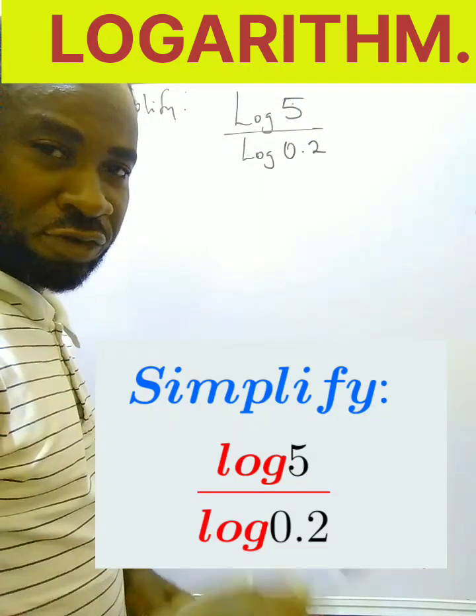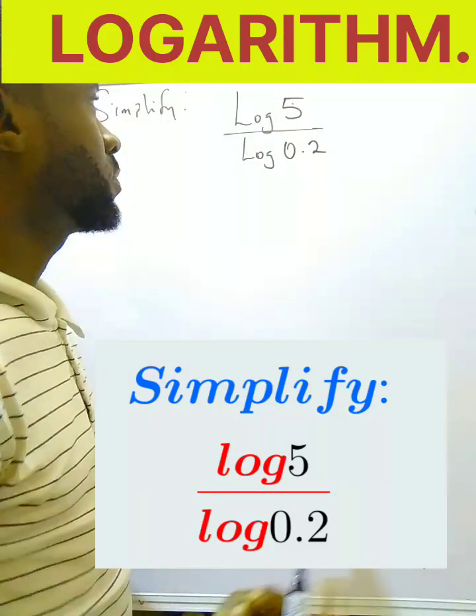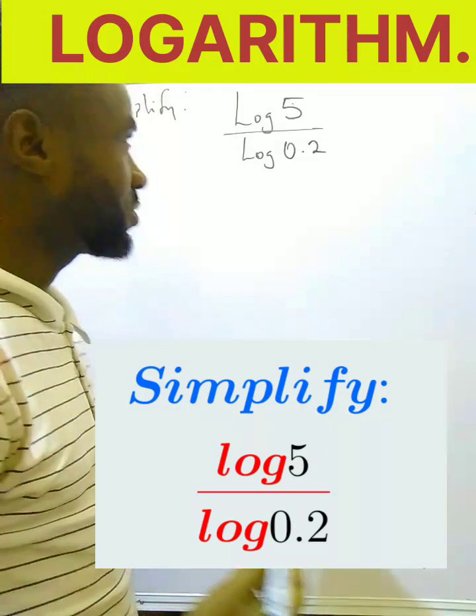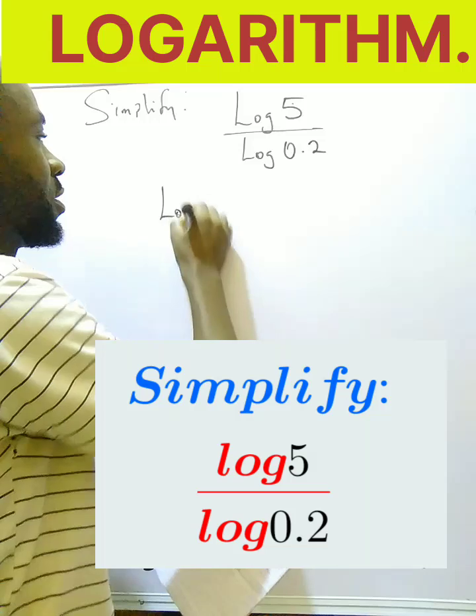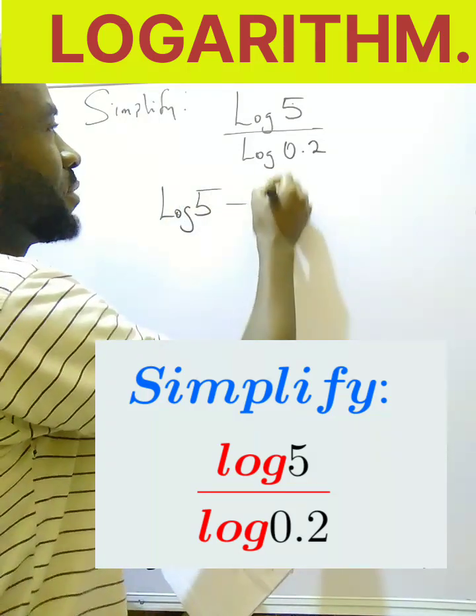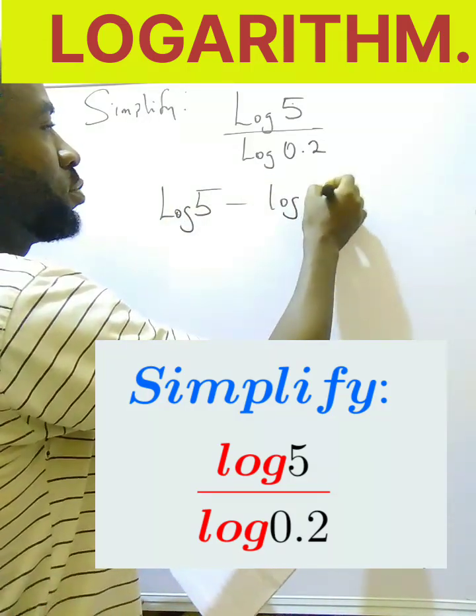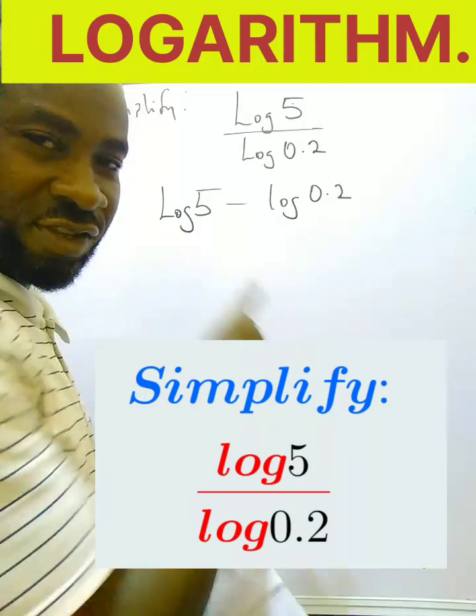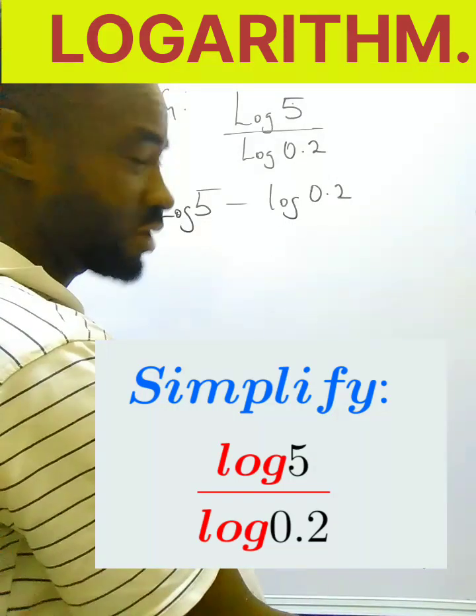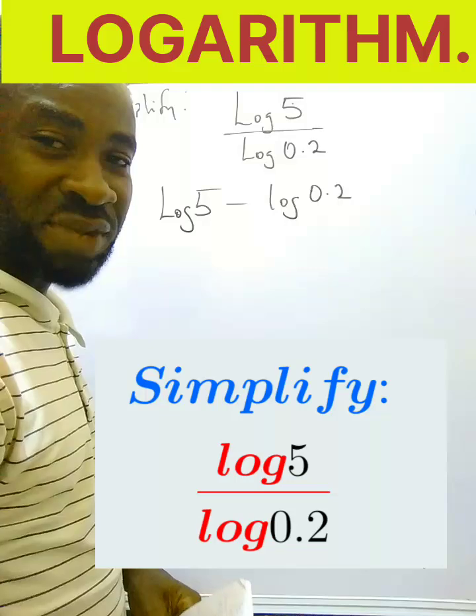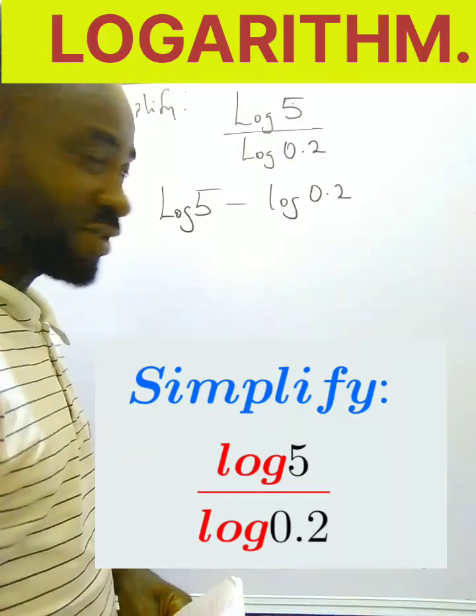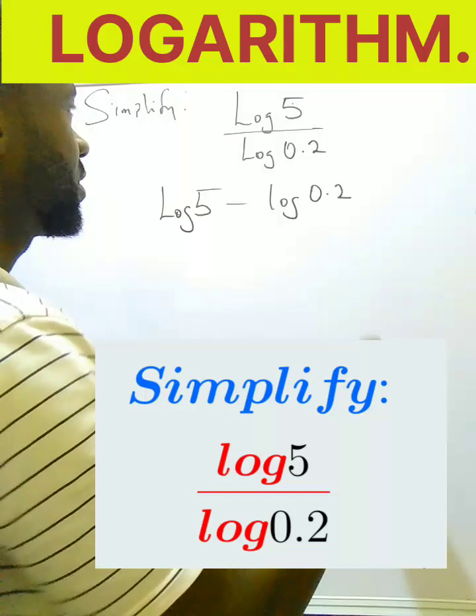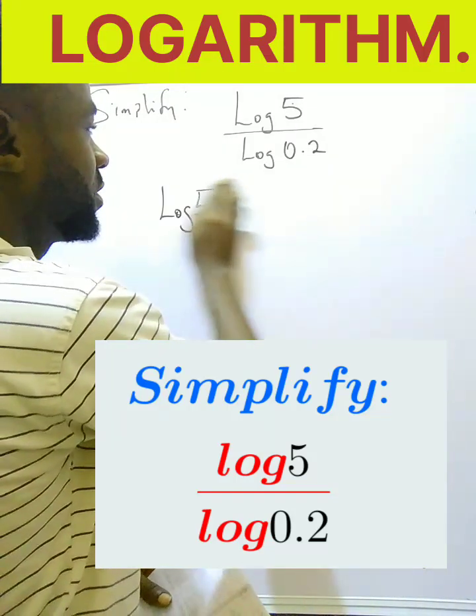So don't be tempted to apply the law this way: log 5 minus log 0.2. No, this law does not apply here. Even though it may seem as if that is the law, that is not the law because this is not a single logarithm.